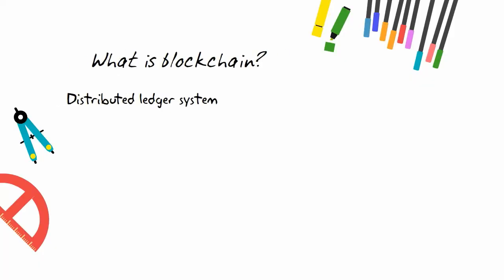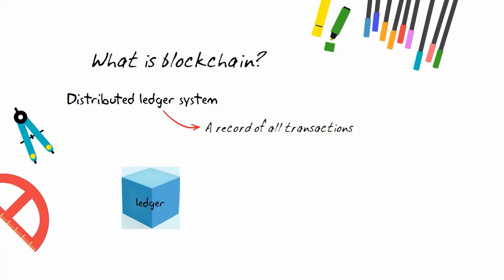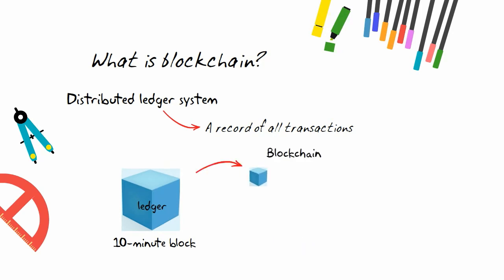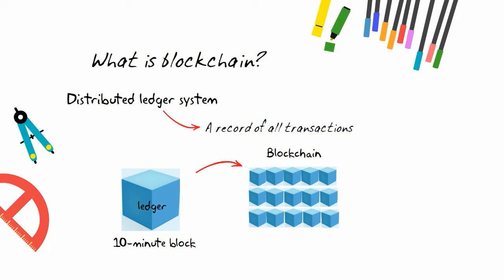Blockchain is a distributed ledger system. A ledger is a record of all transactions. Imagine each 10 minutes as a block — each block contains a record of transactions that happened during that 10 minutes, like a bank statement. These blocks are connected chronologically as a chain, so the blockchain contains all historical transaction records.